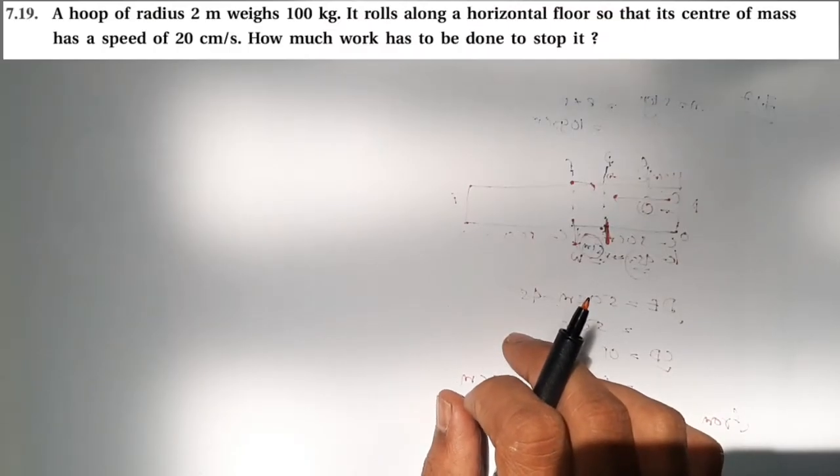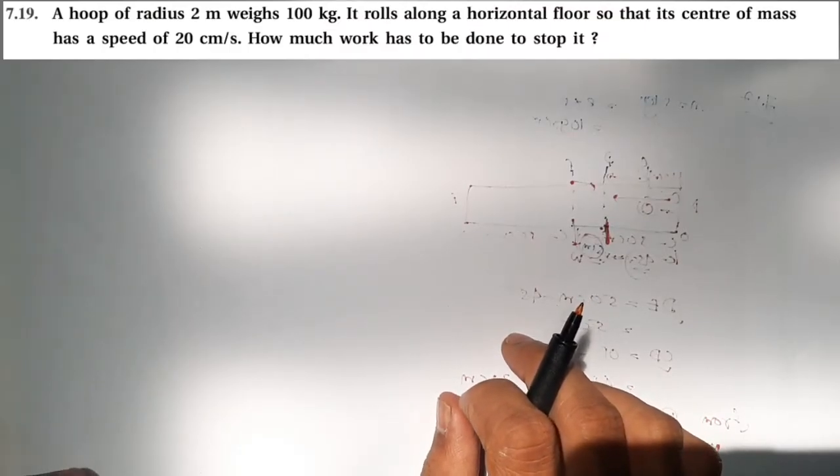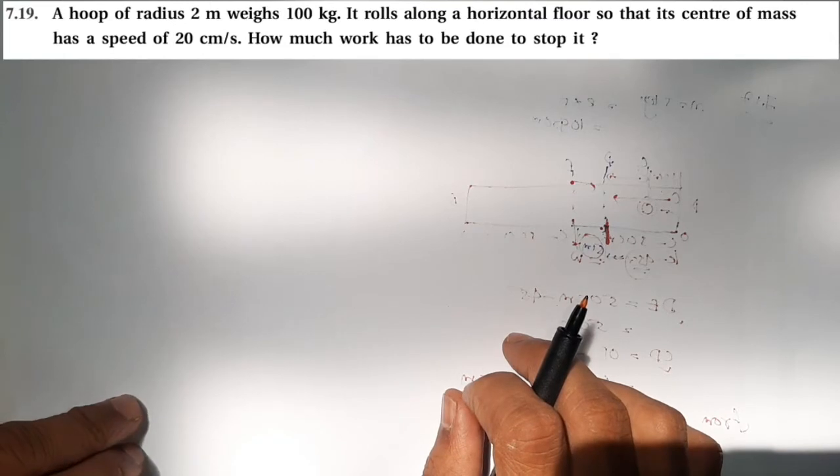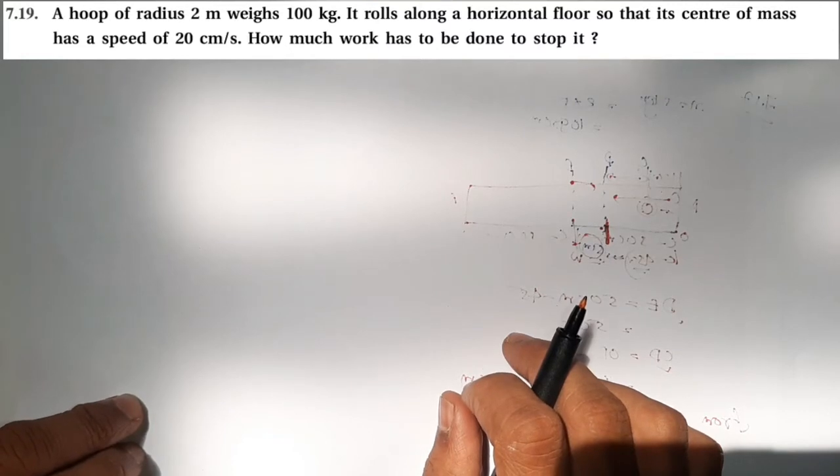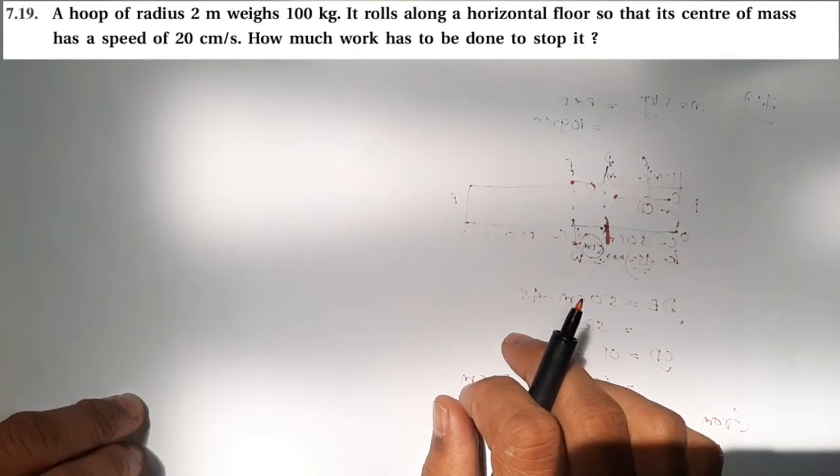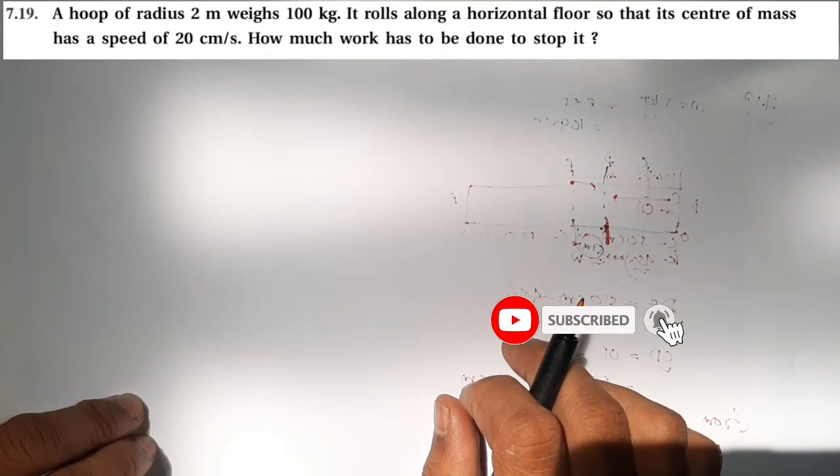Hello students, exercise 7.19. A hoop of radius 2 meters weighs 100 kg. It rolls along a horizontal floor so that its center of mass has a speed of 20 centimeters per second. How much work has to be done to stop it?